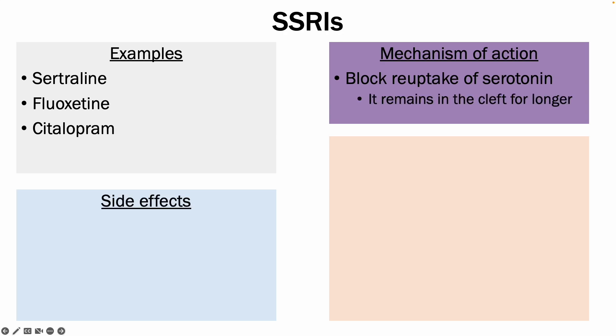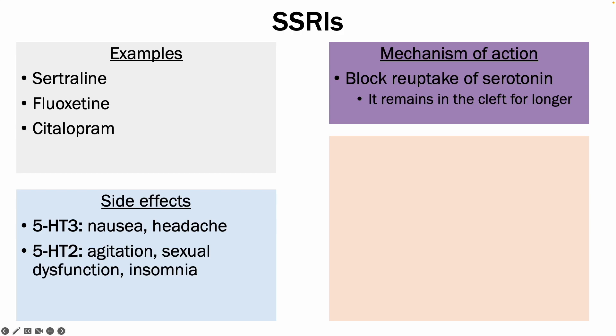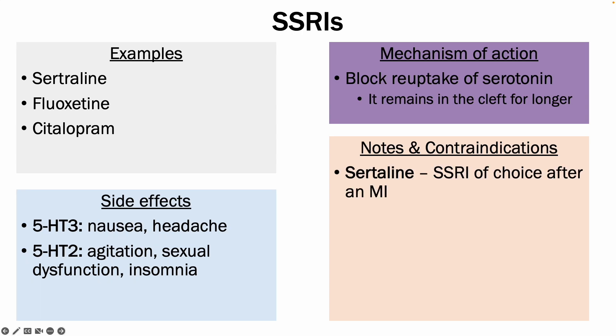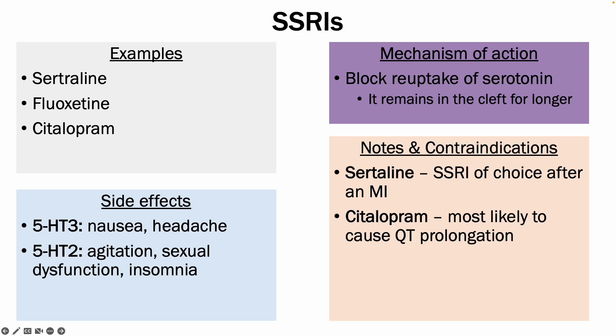The important side effects to be aware of: the 5-HT3 receptor can cause nausea, headache, and GI upset, whereas the 5-HT2 receptor blockade can cause agitation, sexual dysfunction, and insomnia. Sertraline is the best SSRI to use after someone has had an MI, and citalopram is most likely to cause QT prolongation — therefore you should do an ECG before starting someone on it.